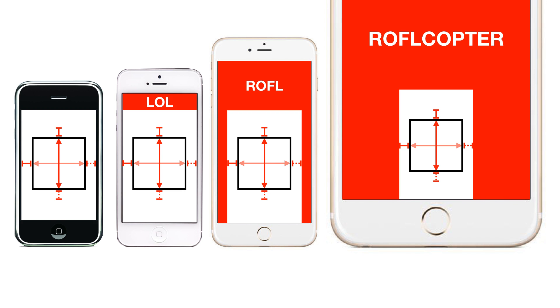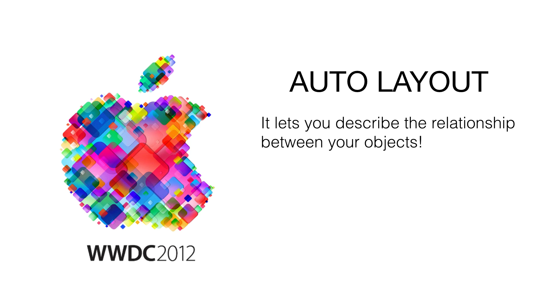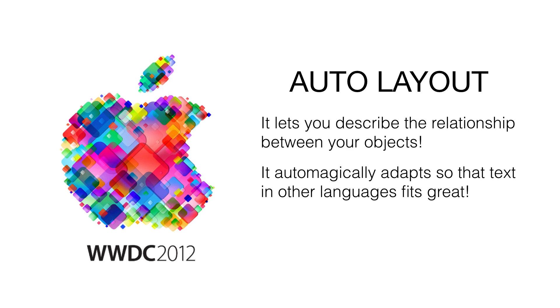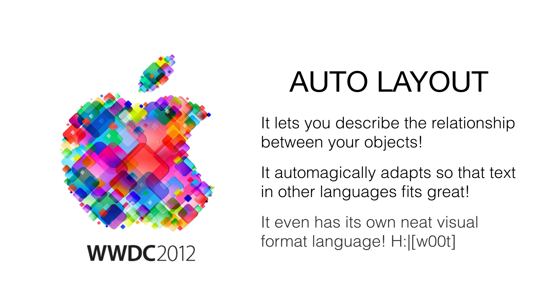Apple knew this was going to happen. Just a few months before the iPhone 5 came out, WWDC 2012 happened and they announced that auto-layout was coming to iPhone. This was cool because it let you, as a developer, describe the relationship between your objects, their position and their size. When you throw foreign languages at it, it would resize things appropriately — super long German words, your labels would resize to fit automatically. And even better, it had a super cool thing called the Visual Format Language, VFL, which let you describe your layouts in ASCII.